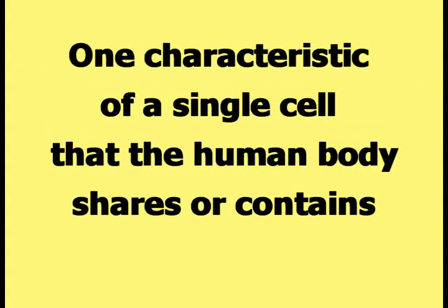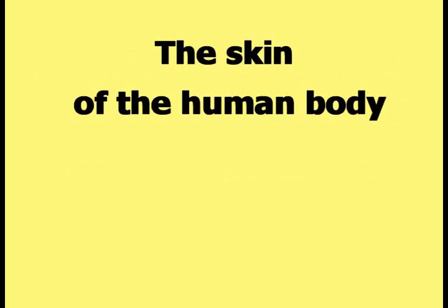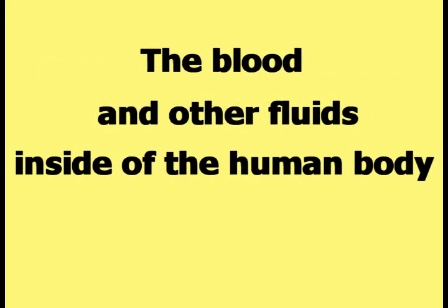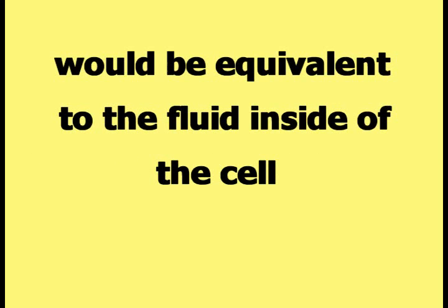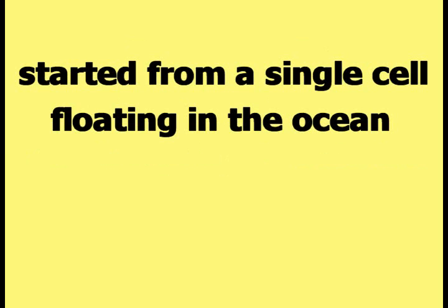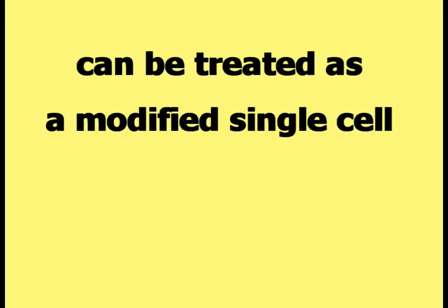One characteristic of a single cell that the human body shares is that the human body can also be described as a fluid-filled sac. The skin of the human body would be equivalent to the sac of the cell. The blood and other fluids inside of the human body would be equivalent to the fluid inside of the cell. Because all of the creatures on the path of evolution started from a single cell floating in the ocean, according to HAPI theory, all of the creatures on the path of evolution can be treated as a modified single cell.